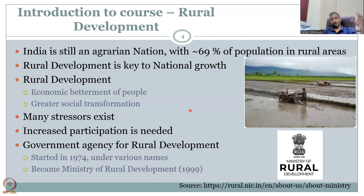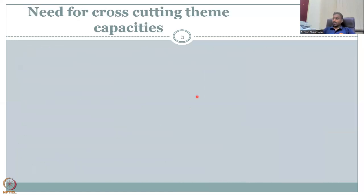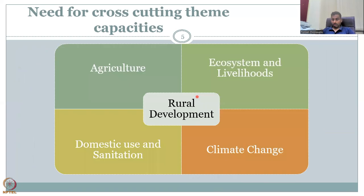That is why the ministry has been created with multiple sub-themes. Increased participation is needed — the government can monitor, but it also needs monitoring from the public who use food from farmers. This course can give you aspects on how to create this kind of data. The Government Agency for Rural Development started in 1974 under different names and became the Ministry of Rural Development. Rural development is multidisciplinary and needs cross-cutting capacities — agriculture, ecosystem, livelihoods, domestic use, and climate change.